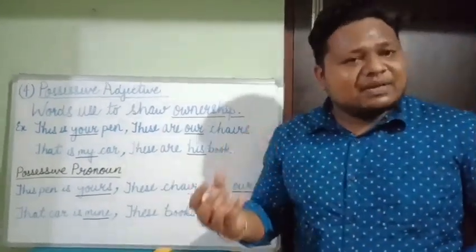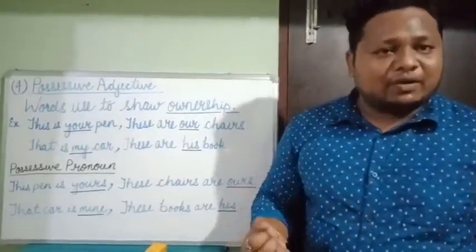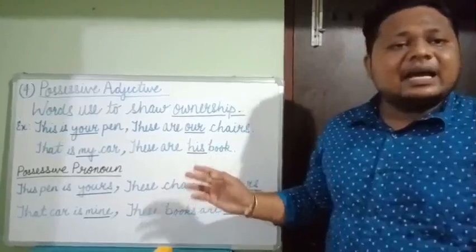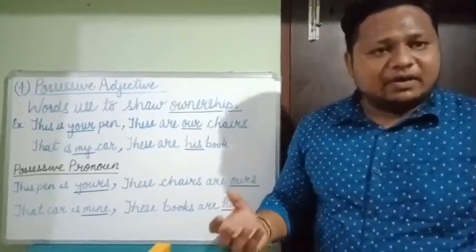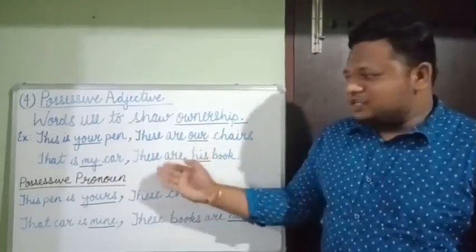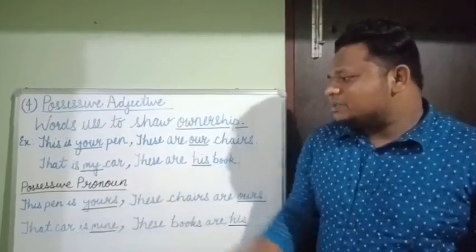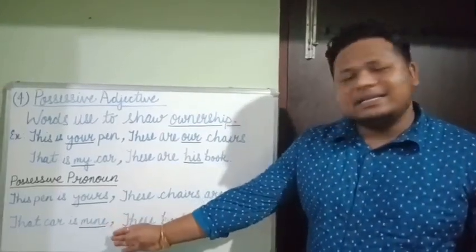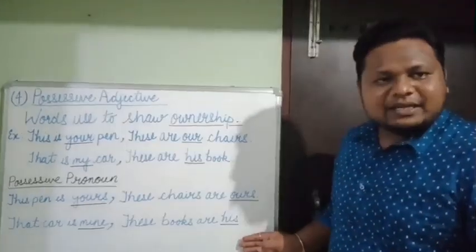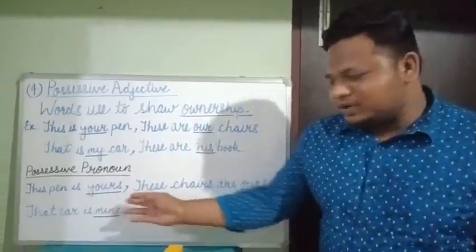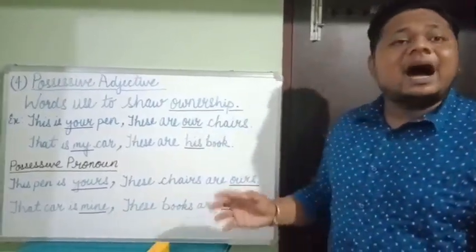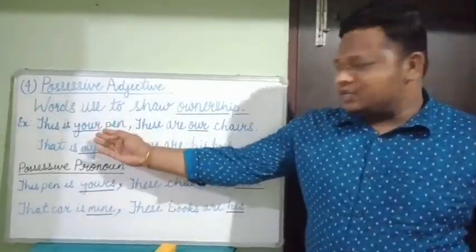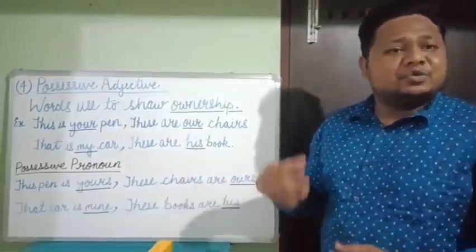As we read about possessive pronouns in the previous class, I told you how the words your, our, my, and his are used as adjectives. Let us see how these possessive adjectives differ from possessive pronouns. As possessive pronouns, the sentences would be: This pen is yours. These chairs are ours. That car is mine. These books are his. Here, yours, ours, mine, and his are used in place of a noun. In the earlier sentences, your, our, my, and his are used as adjectives — directly before a noun.